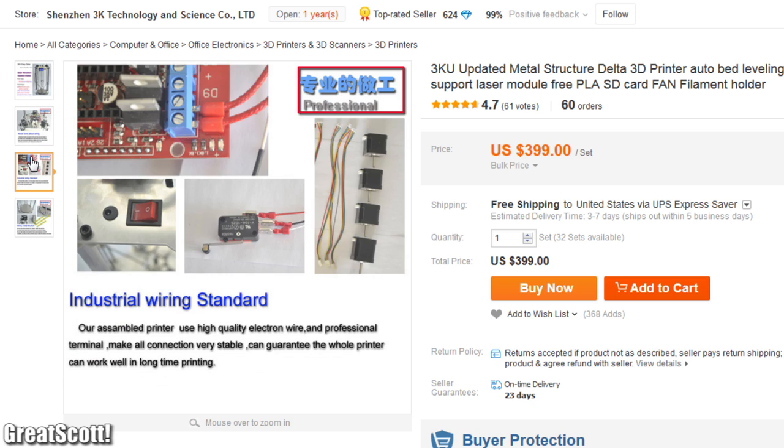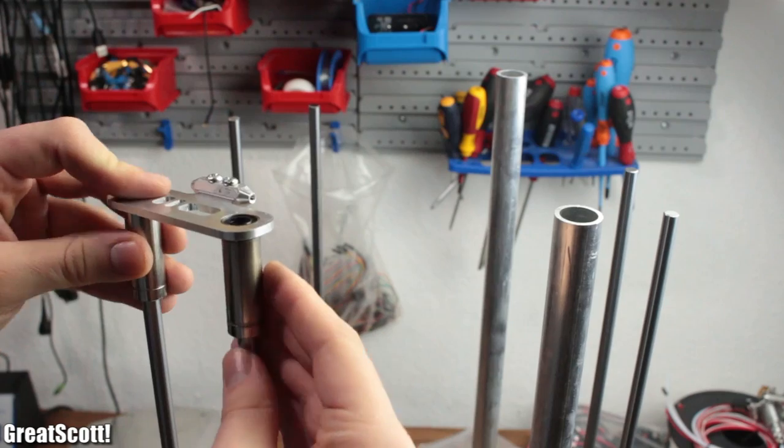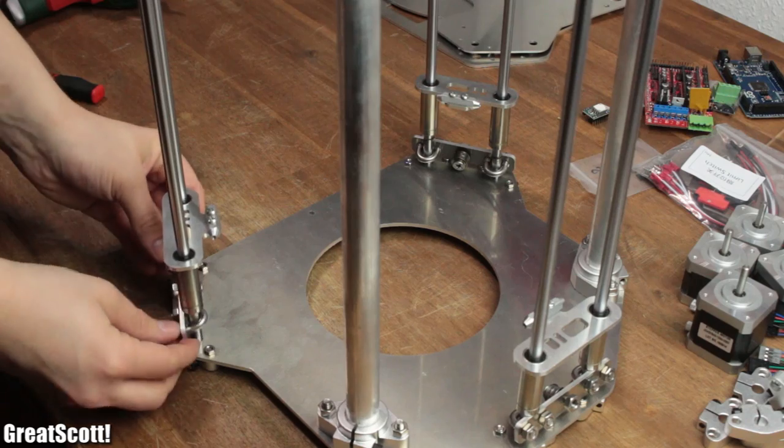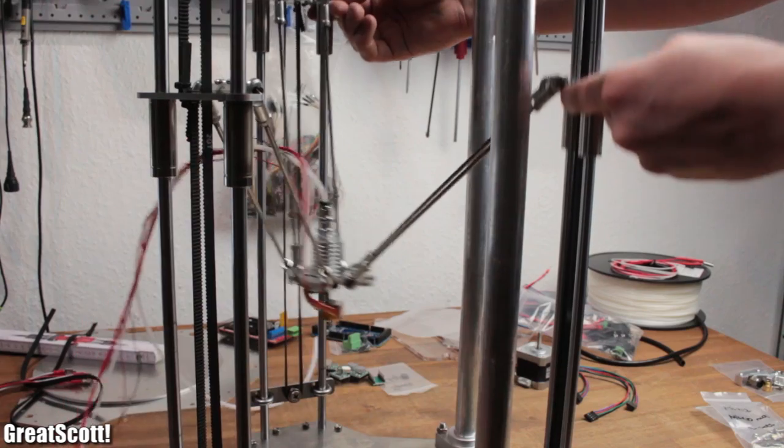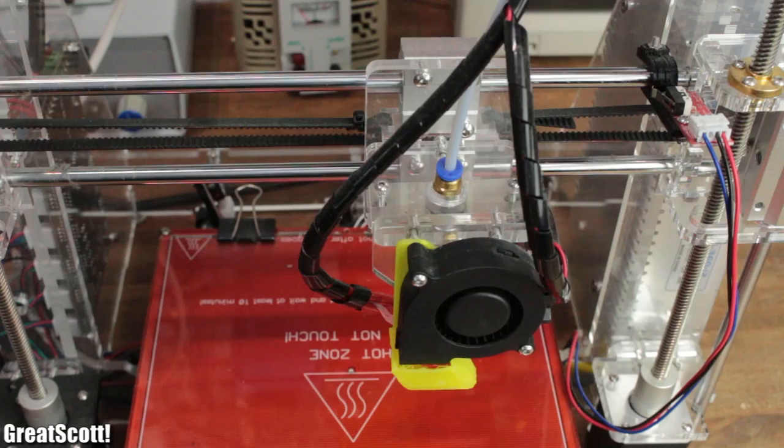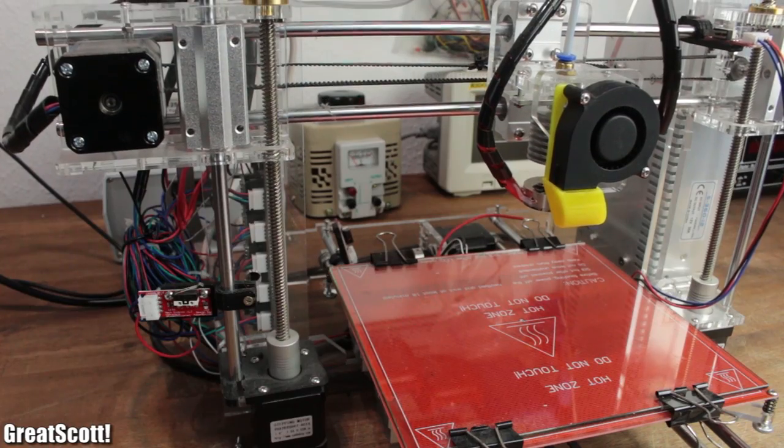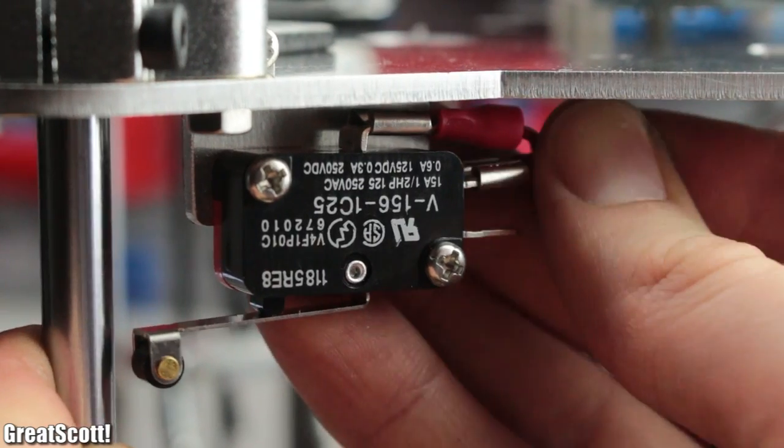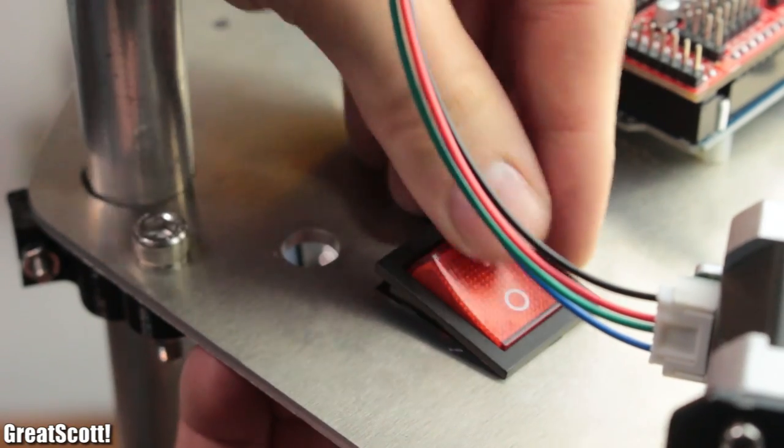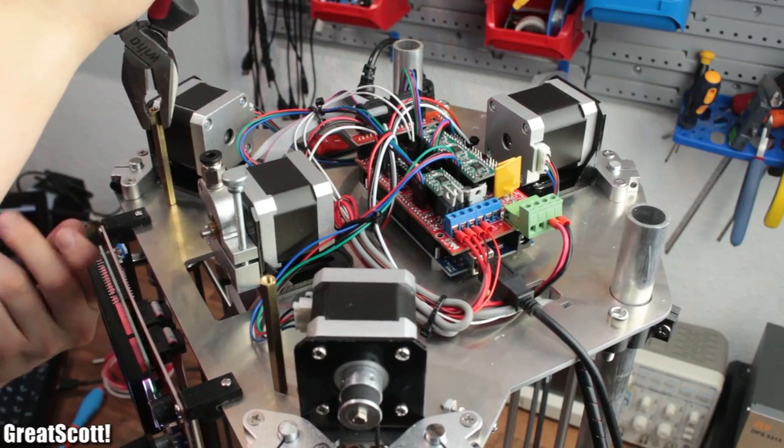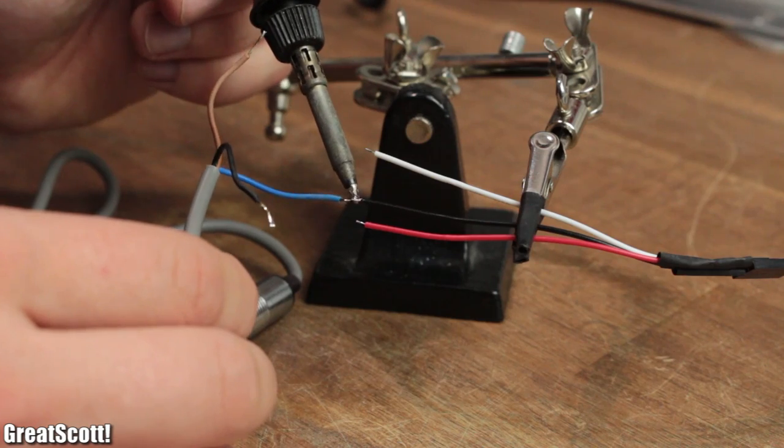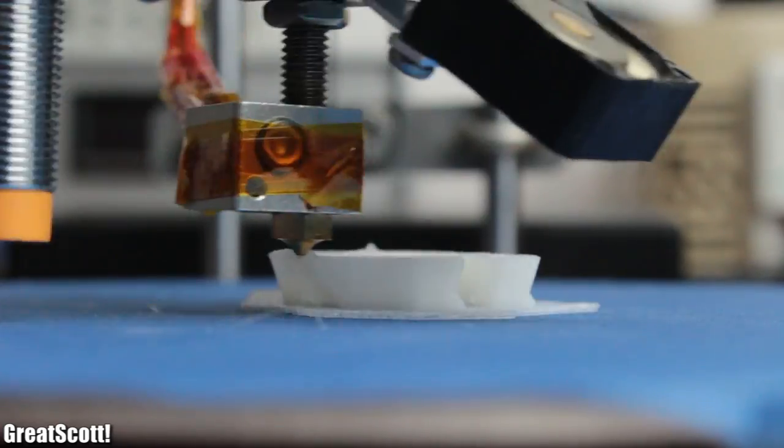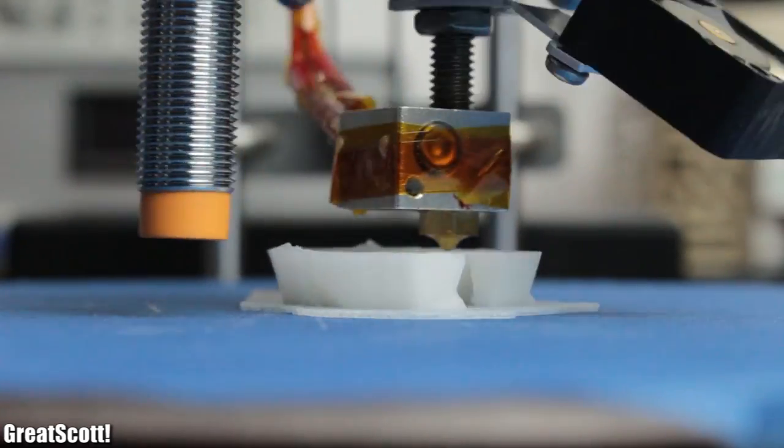This DIY Delta 3D printer kit uses three individually controllable z-axes to move the extruder around, instead of the classical x, y, and z-axis types. In this video, I will present you the advantages of this technique regarding the design choices, mixed with all the experiences I collected during the build, modifications, and the actual prints. Let's get started.